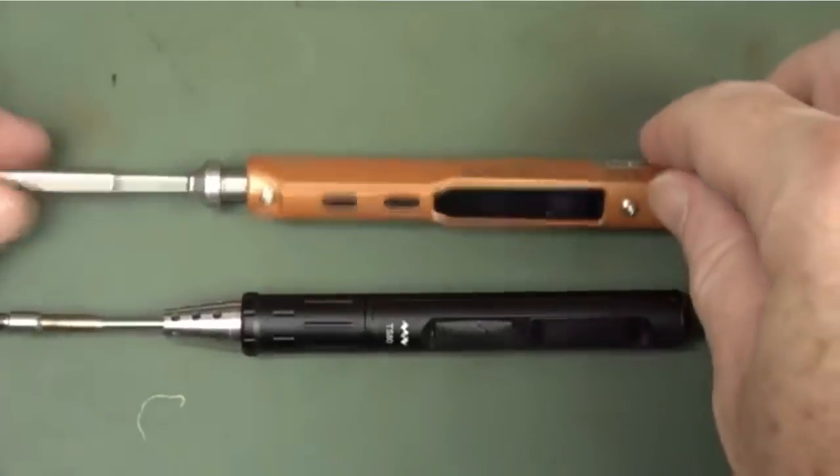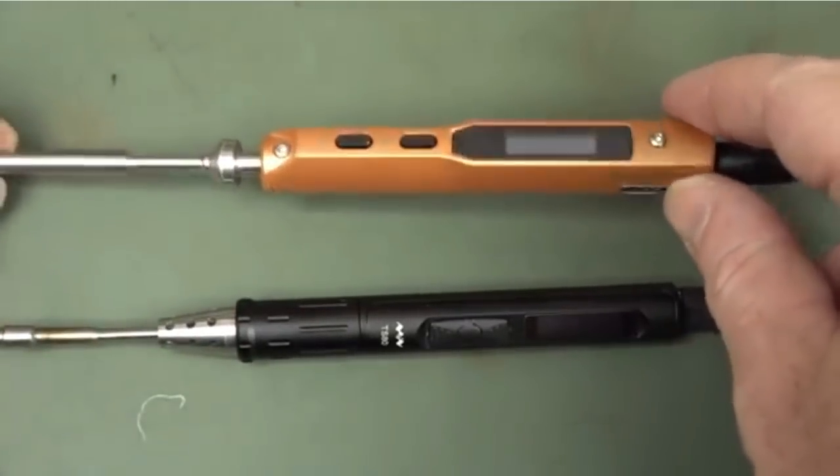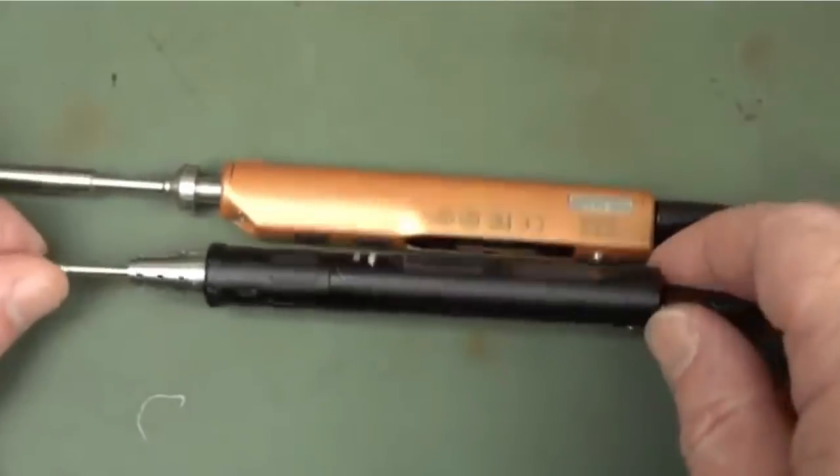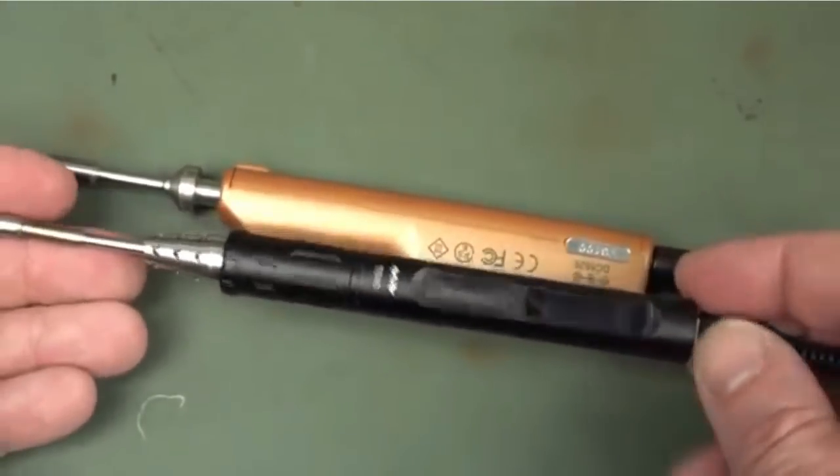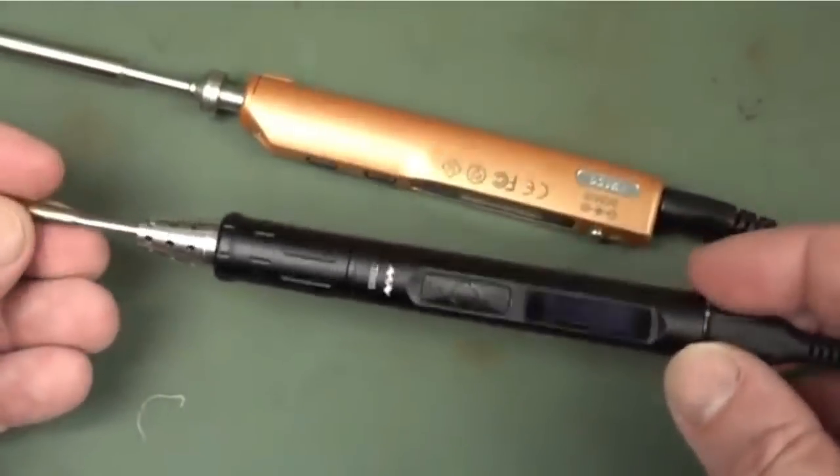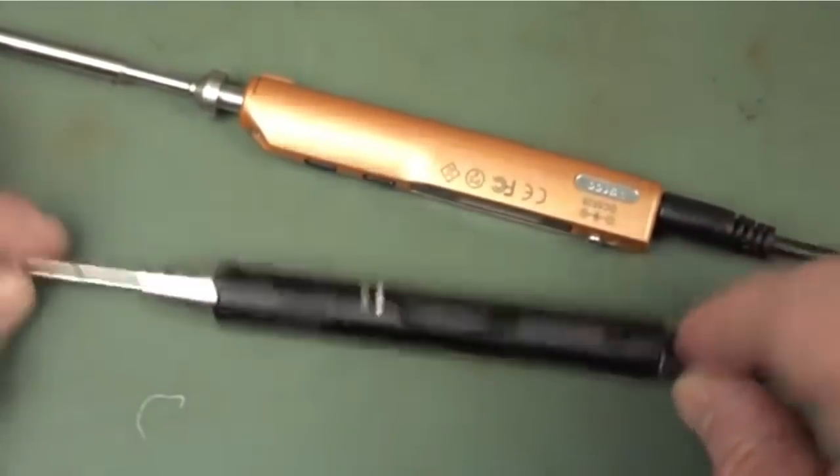The TS100 is significantly cheaper - it's about 50 US dollars as opposed to over 70 US dollars for the TS80. But in terms of build quality and everything, it's worth the extra. No doubt.